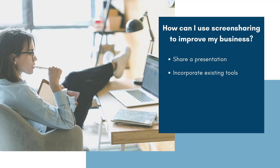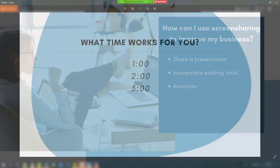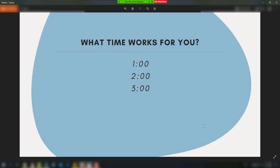Another topic that was mentioned in our last video was the annotate feature. Annotate can be used as a great icebreaker, but it can also be a tool for voting or expressing opinion. For example, if I am scheduling a Zoom meeting for next Tuesday and I have written three possible times on a slide, my attendees can use the annotate feature to put a check mark beside the times that work for them.